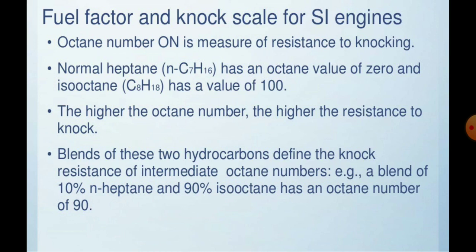The cetane and octane numbers — particularly octane numbers — are a measure of resistance to knocking. The gravity and the force of molecular attraction between fuel particles are the most important factors for burning and for the theory of knocking. Normal heptane has an octane value of 0 and isooctane has a value of 100. The higher the octane number, the higher the resistance to knock. For example, a blend of 10% heptane and 90% isooctane gives an octane number of 90.